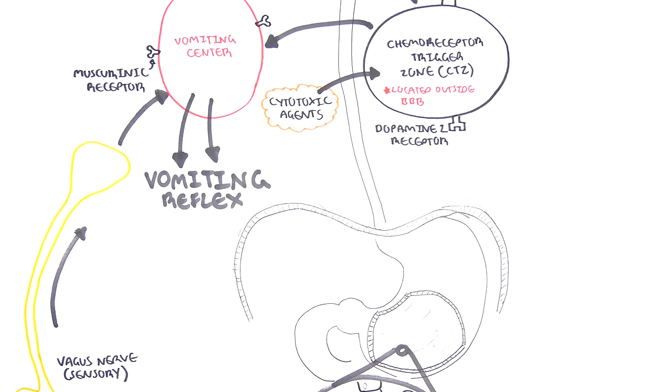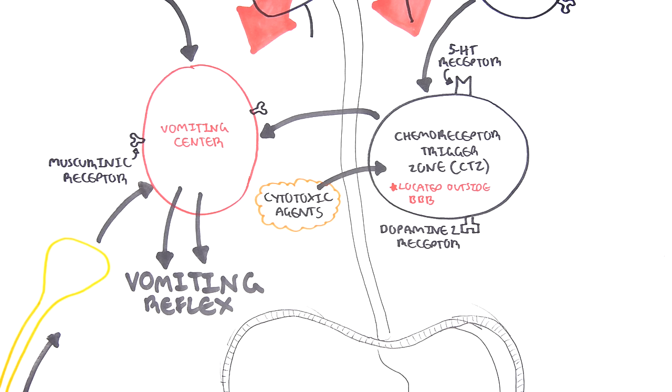In summary, all the causes of vomiting we talked about will stimulate the vomiting center, which is the output from which the vomiting reflex or emetic reflex is initiated.